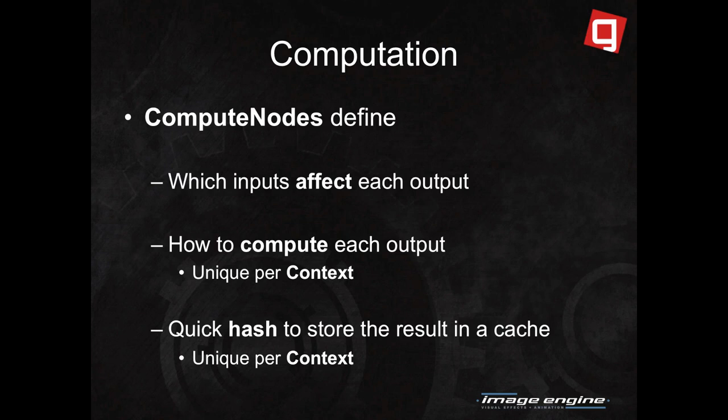Beyond basic nodes, we have compute nodes. These define three main methods which allow the underlying computation engine to evaluate data in the graph. Each compute node has to define which input affects each output, how to compute each output, and a quick hash so we can store things in memory and re-fetch them to avoid extra computes.